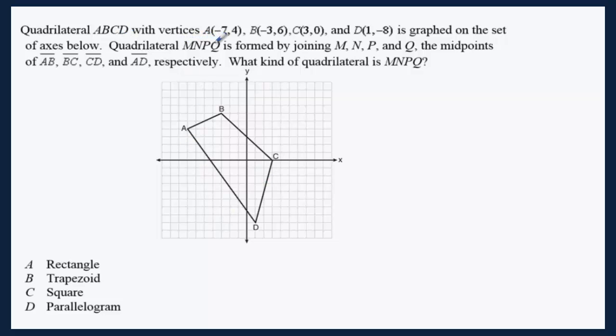Quadrilateral MNPQ is formed by joining M, N, P, Q, the midpoints of AB, BC, CD, and DA respectively. What kind of quadrilateral is MNPQ?